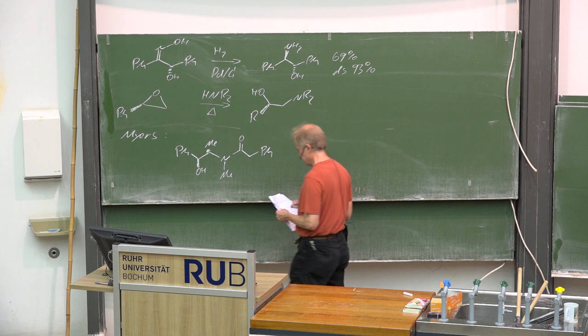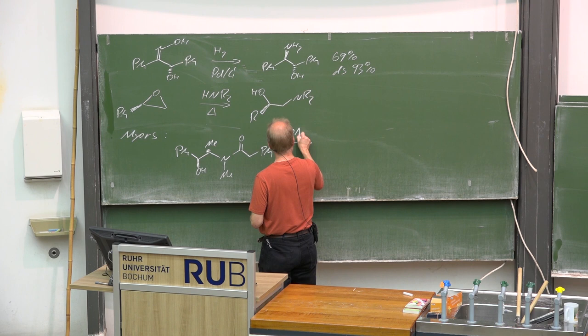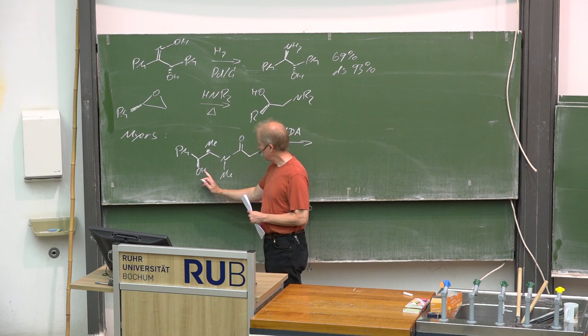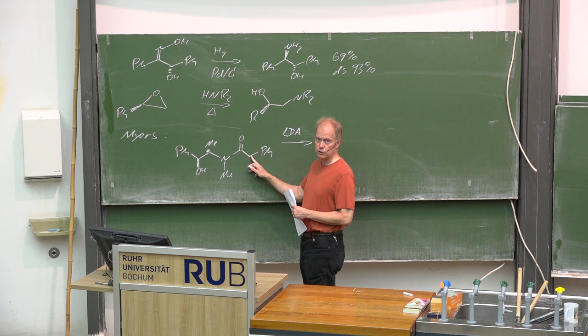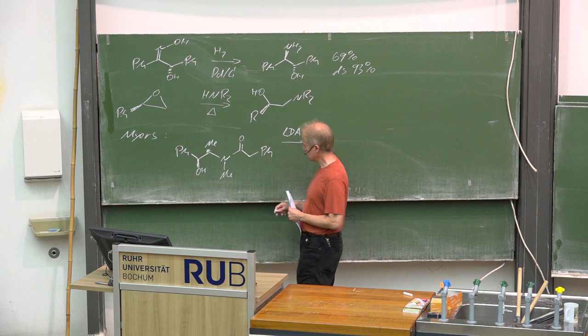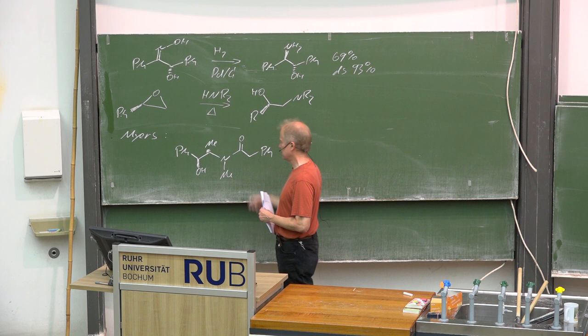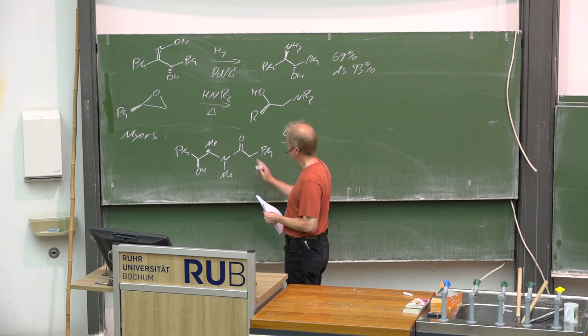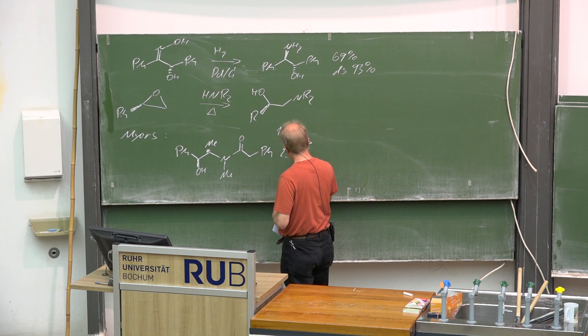And then with LDA, it was deprotonated, of course, twice: at the more acidic OH group and alpha to the carbonyl group, forming the enolate. This provided the chiral environment for a diastereoselective C-alkylation with benzoyl bromide.